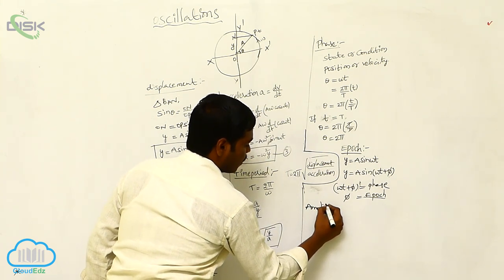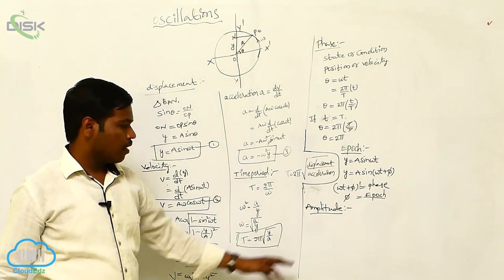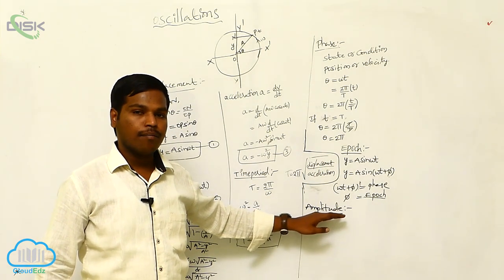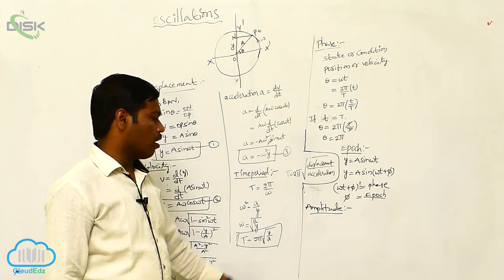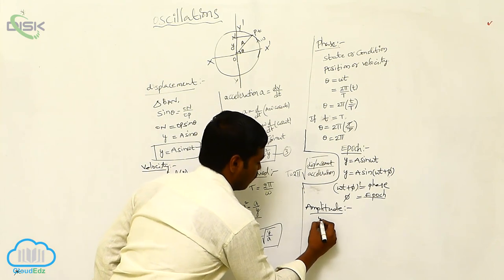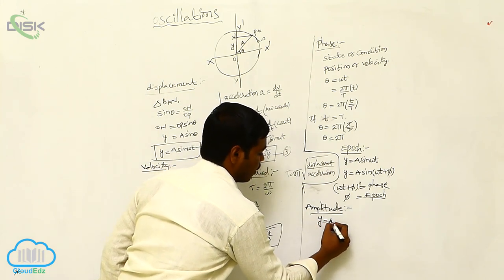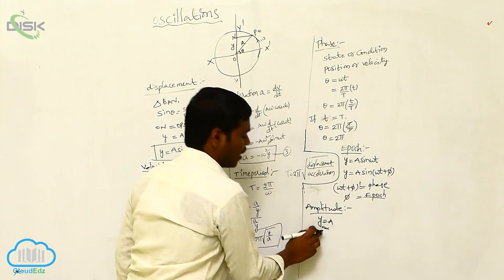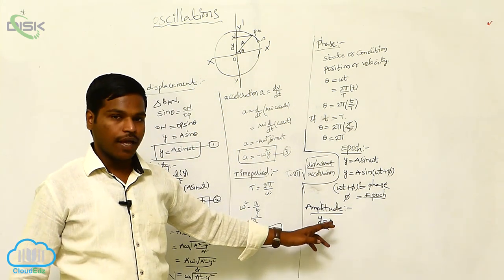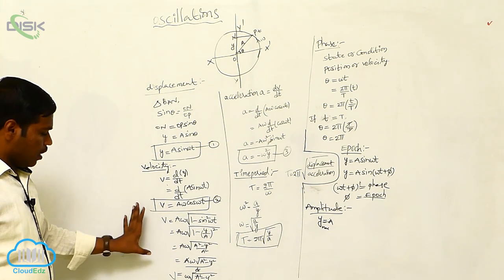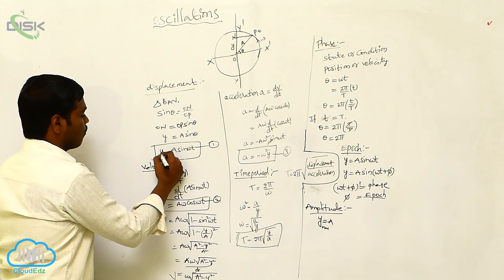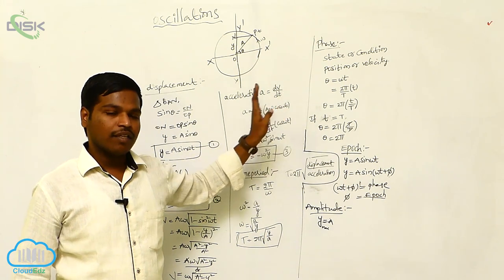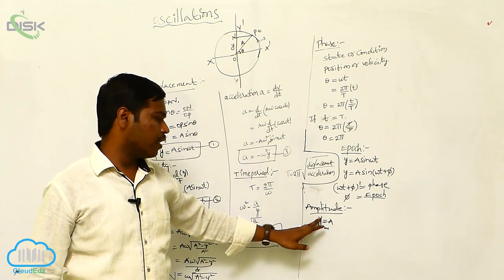Amplitude means the maximum displacement of a particle from the mean position. It is denoted by A. When y = y_maximum, the maximum displacement equals the amplitude A. From the equations, at extreme positions the displacement is maximum, giving us the amplitude. This is the amplitude of a particle executing simple harmonic motion.